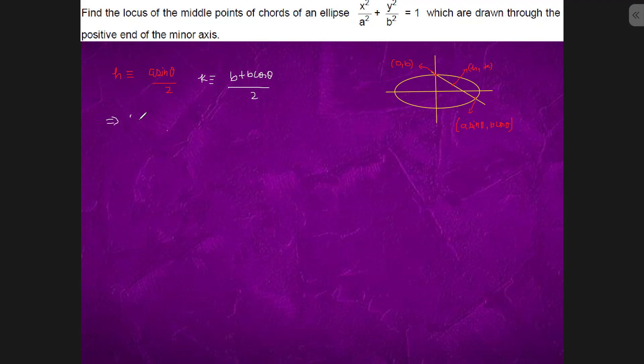Can we say this as 2h by a equals sin theta, 2k by b minus 1 equals cos theta? Square both equations and add. It will become 4x square by a square plus (2y by b minus 1) whole square equals 1. This is the locus.